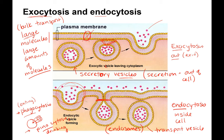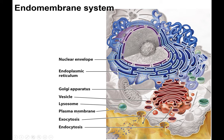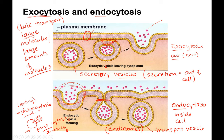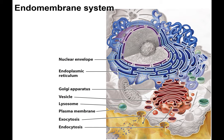So exocytosis and endocytosis — one should be familiar with those terms. The endomembrane system, we're going to talk a lot about in chapter 12. The endomembrane system is a coordinated group of some of the organelles in eukaryotic cells. It consists of the nuclear envelope, shown in purple. Remember that the nucleus is surrounded by a double membrane — that's the nuclear envelope. Right outside of the nucleus is the endoplasmic reticulum, the ER.